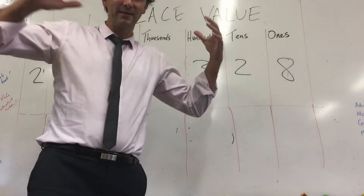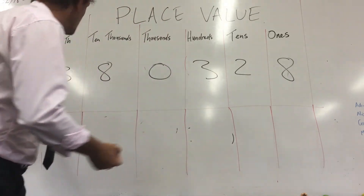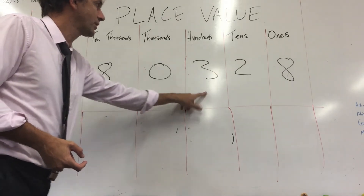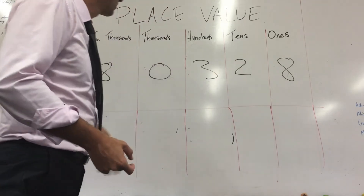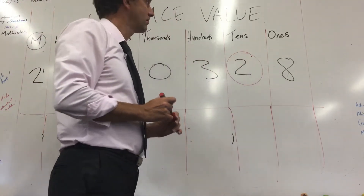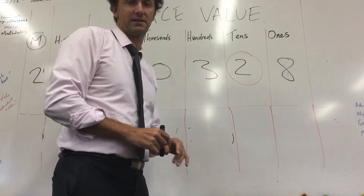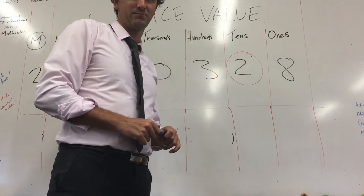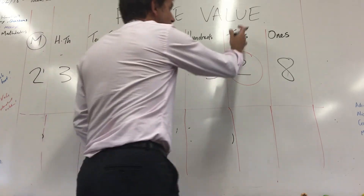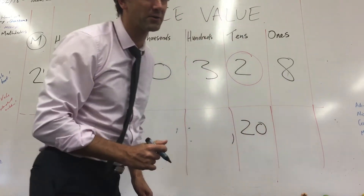We're back. We're up to the together phase now — you're going to do this one with me. Here's the number: two million, three hundred and eighty thousand, three hundred and twenty-eight. So what's the value of this two? It's in the tens column — don't tell me the answer's two. I hope you said it was two lots of ten, which is twenty. It's two tens, so it's twenty.